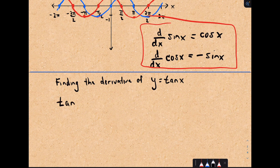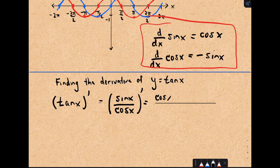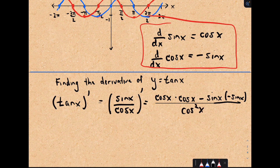Let's find the derivative of tangent x using prime notation. I can write tangent as sine over cosine. All the other trig functions—tangent, cotangent, secant, cosecant—as long as you remember the derivatives of sine and cosine and some basic identities, you can derive the rest. We have to use the quotient rule. The derivative of sine over cosine gives us: cosine x times the derivative of the numerator (which is cosine x), minus sine x times the derivative of the denominator (which is negative sine x), all over cosine squared x.